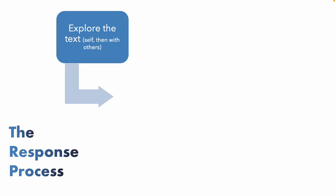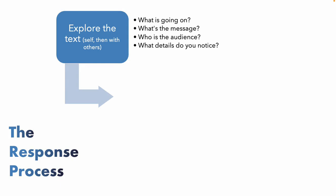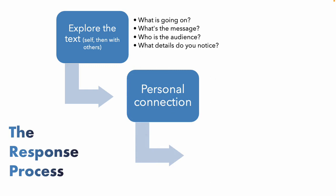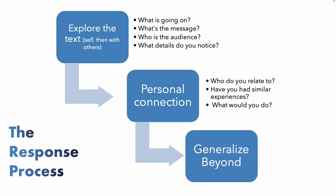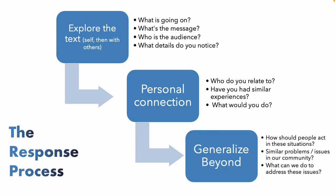The phases move from superficial — what's the message, who's the audience, what details do you notice, the who-what-where-when questions — and then students share with others. The personal connection phase gets them to start thinking more critically: who are you relating to, have you had any similar experiences, what would you do if you were in that situation? This prepares them for reinvesting understanding. Then generalizing beyond really engages critical thinking skills — thinking about the moral implications of different situations, how people should act, what issues we have in our community, how can we address them, engaging their activism.